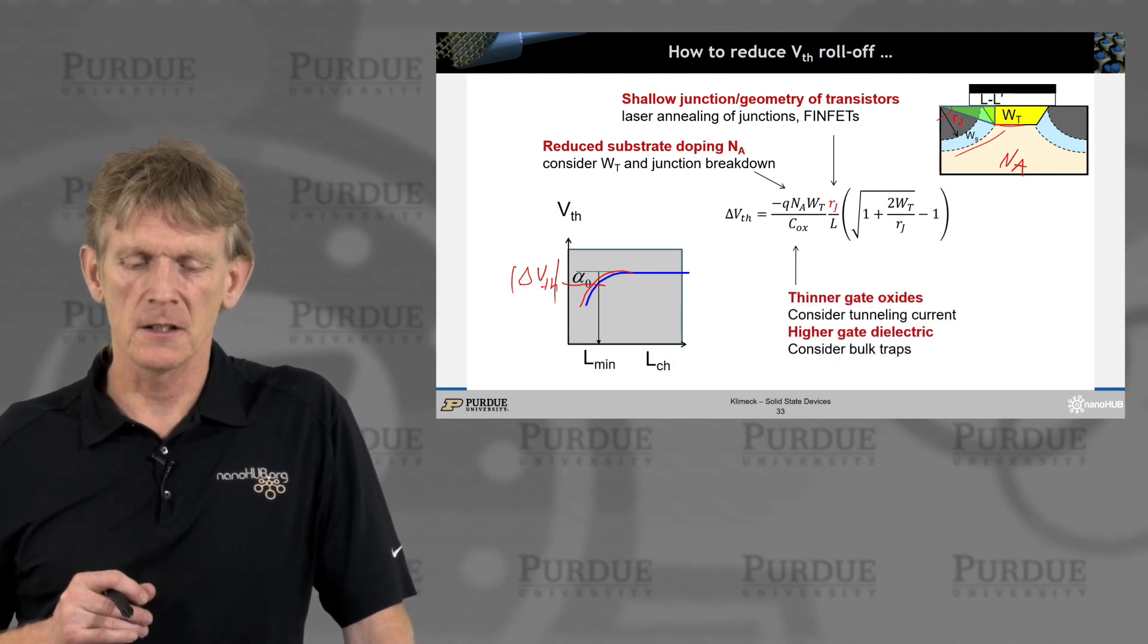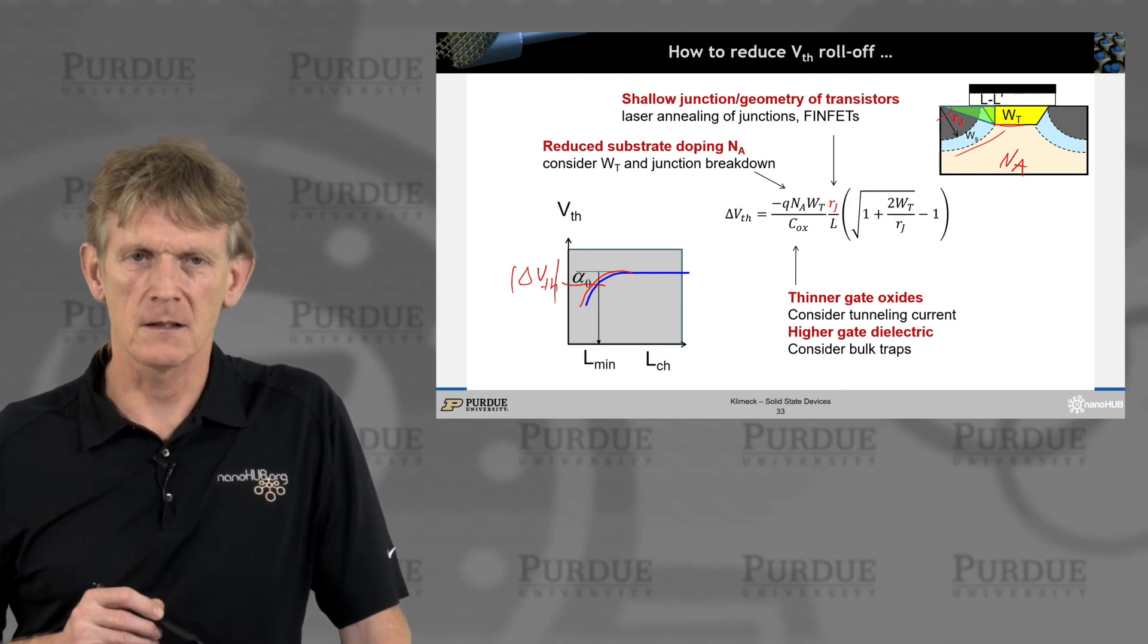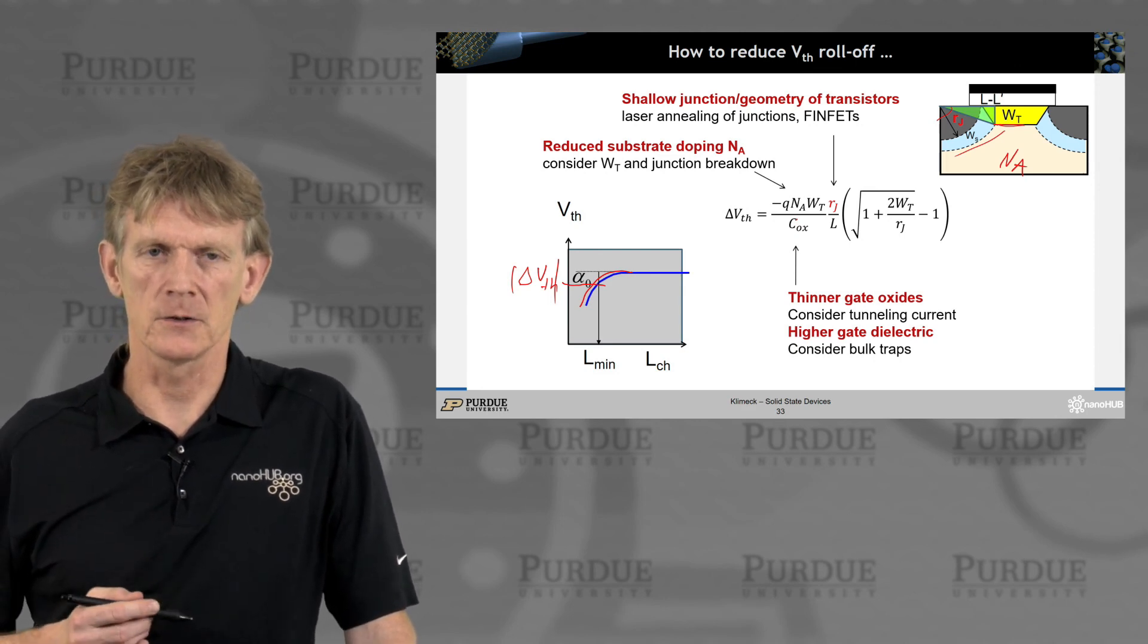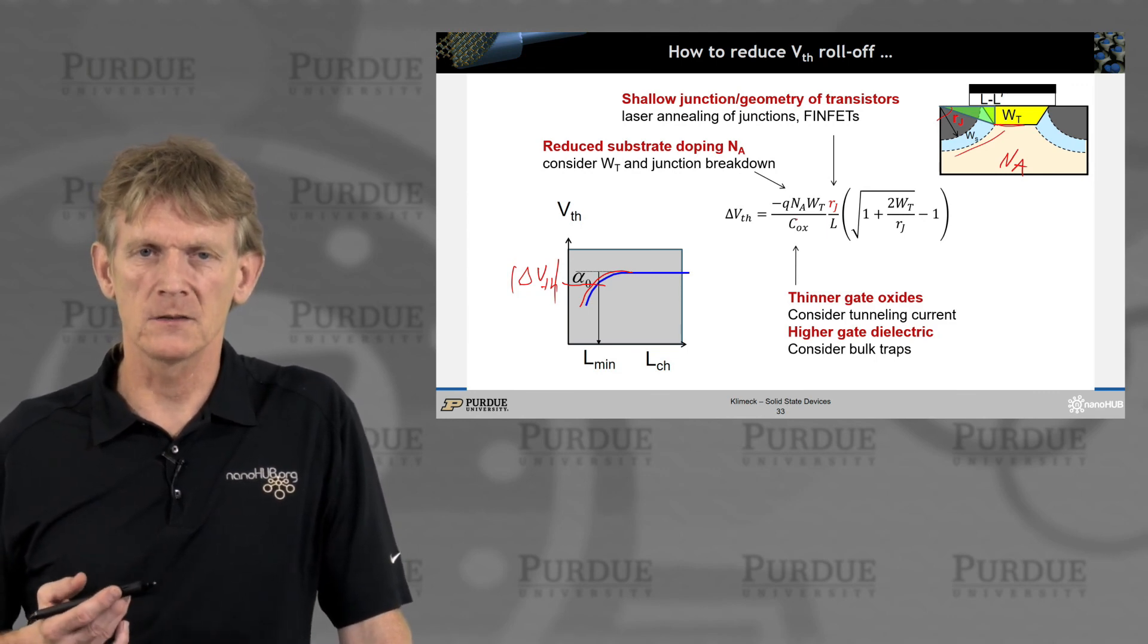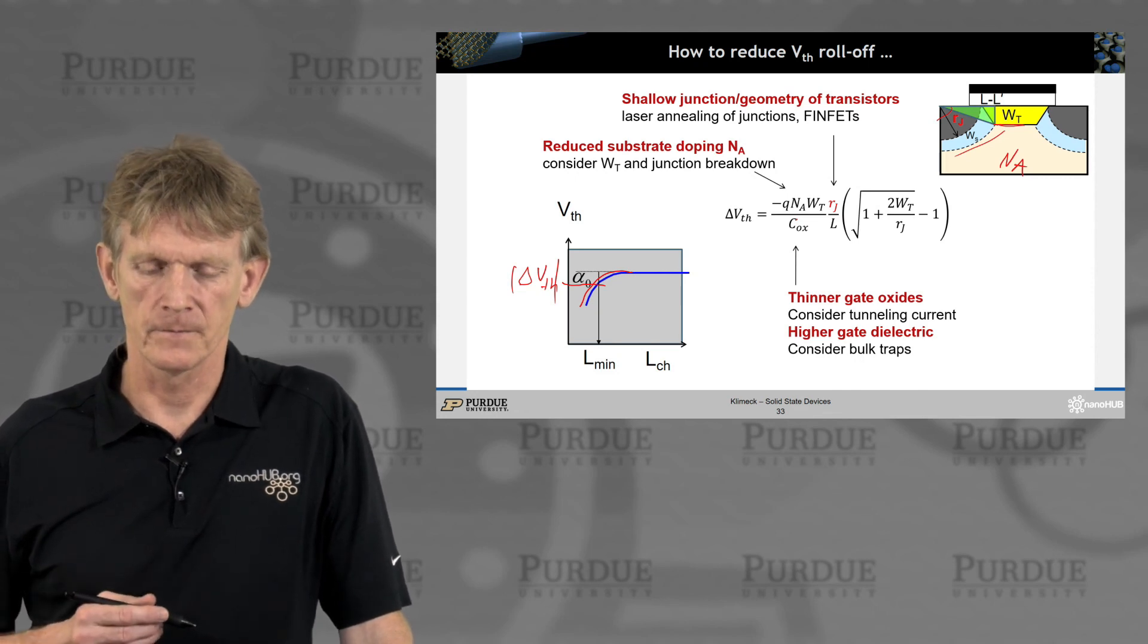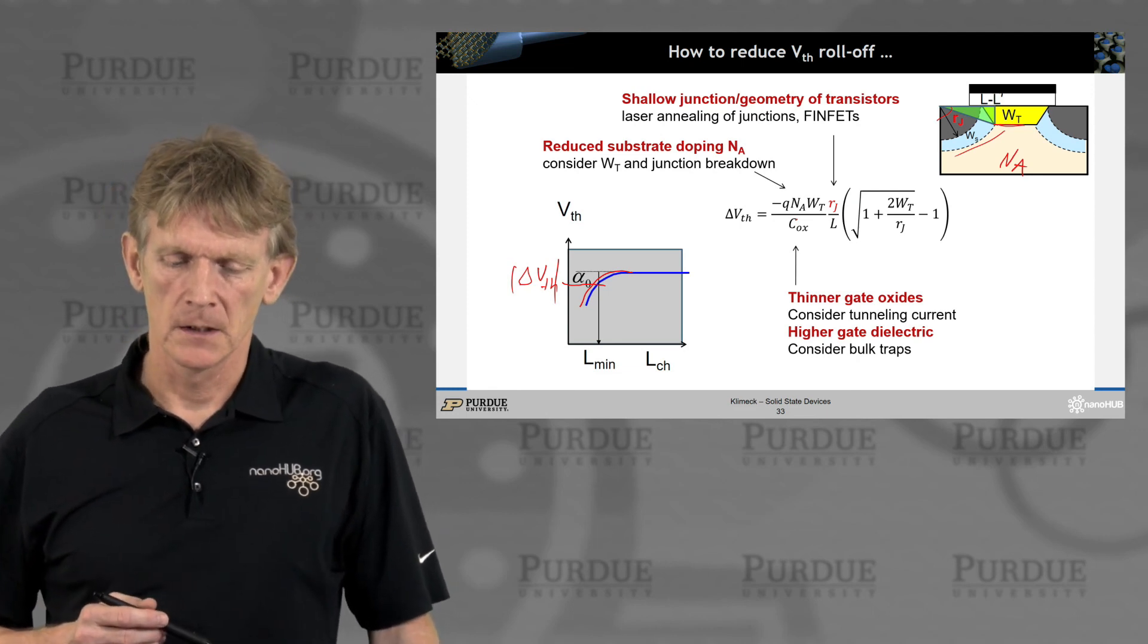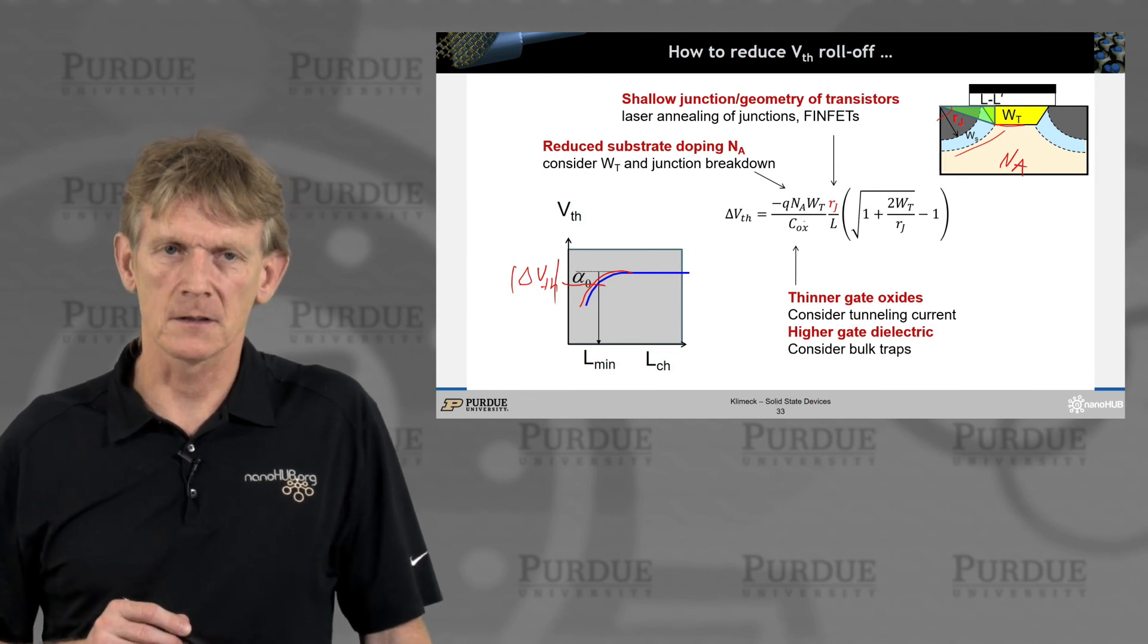You could consider thinner gate oxides. If you make the gate oxide thinner, then your capacitance rises, and therefore the threshold shift is reduced. Now if you make the gate oxide too thin, you will have tunneling current, which is also not a good thing.